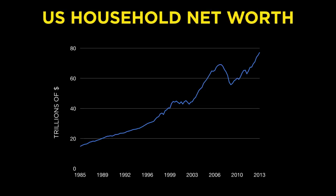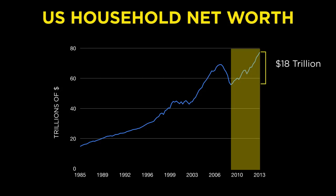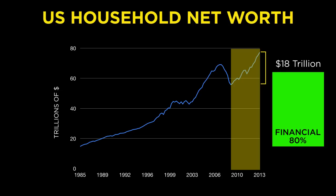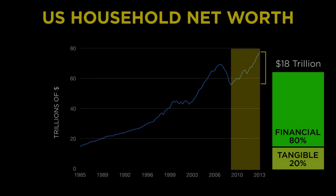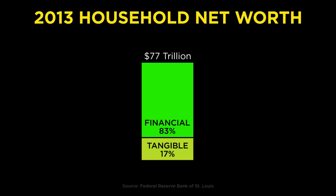Where did the $18 trillion in new wealth since 2009 come from? About 80% of that growth came from a rise in financial assets, and the remaining 20% came from growth in real estate and other tangible assets. Looking at the actual amount of household net worth today, we see that 83% of the total net worth consists of financial assets, totaling about $63 trillion, while the tangible assets are the remaining 17% and total around $14 trillion.